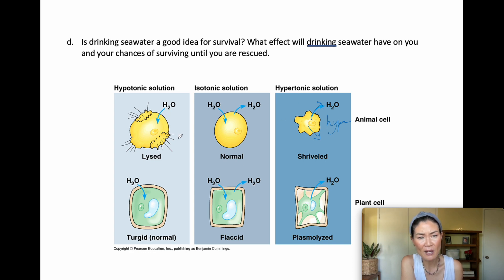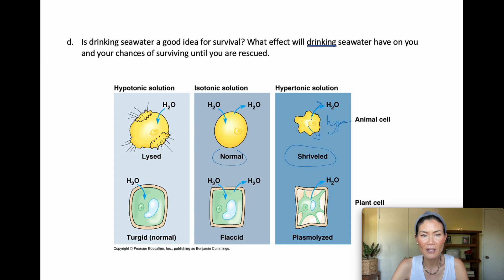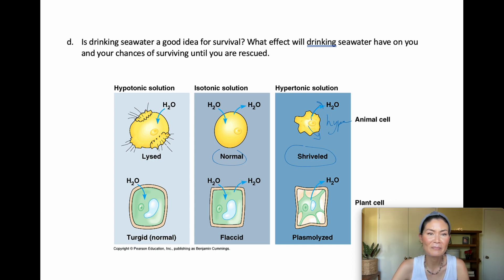Remember the diagram: in a hypotonic solution, animal cells could burst; in isotonic, they're at normal state; and in a hypertonic solution, animal cells will shrivel up. That's what I wanted to go over for the lab packet. I hope this video helped you better understand all three parts of the lab and that you're ready for the quiz and FRQ on diffusion and osmosis.